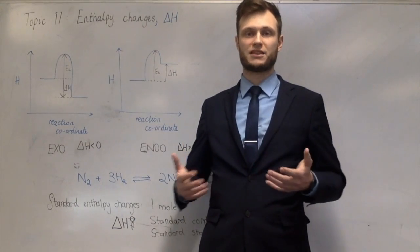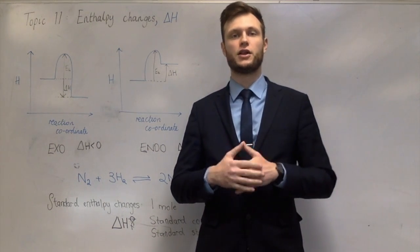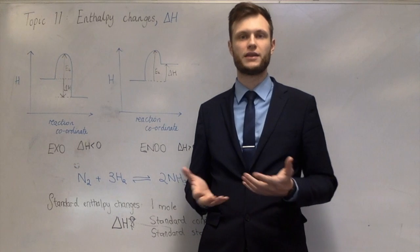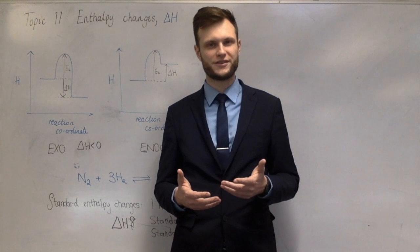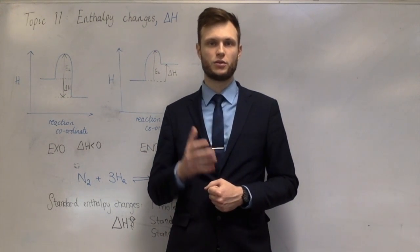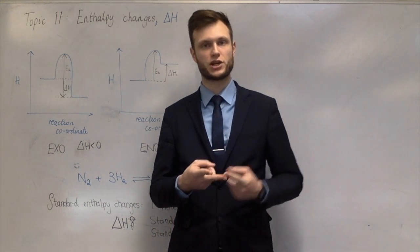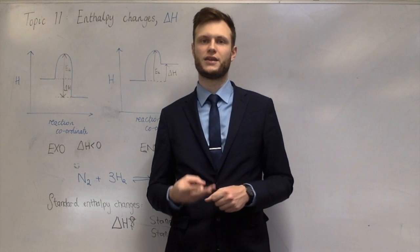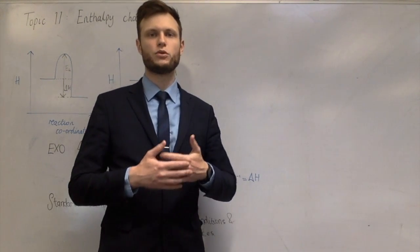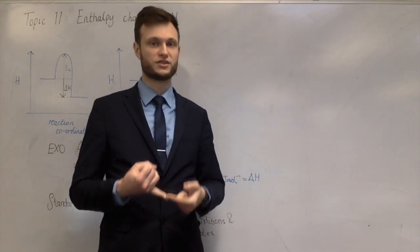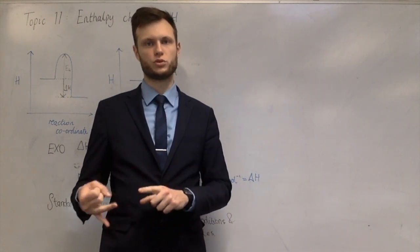To work out an enthalpy change of reaction experimentally, the typical method is to heat a known mass of water and measure the temperature change. We then use the specific heat capacity equation Q = mcΔT to calculate the energy change. The specific heat capacity of water is given on the datasheet. All experimental methods have one thing in common: they heat water or a solution and measure its temperature change.